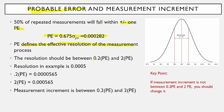The probable error defines the effective resolution of the measurement process, something that gauge R&R analysis never really does. The resolution should be between 0.2 probable errors and 2 probable errors. In our example data, you've measured to the closest 0.0005, so that's our resolution or measurement increment. You do your calculations of 0.2 probable errors and 2 probable errors and discover that this falls within that range, so our resolution is okay. The key point is: if it's not between 0.2 and 2 probable errors, you're going to need to change it.